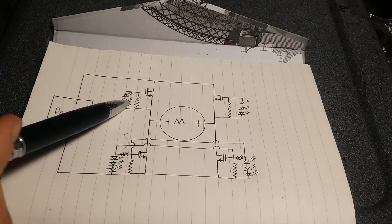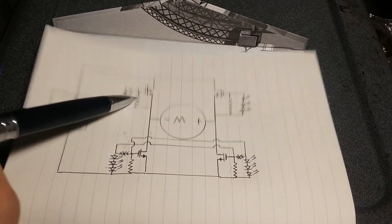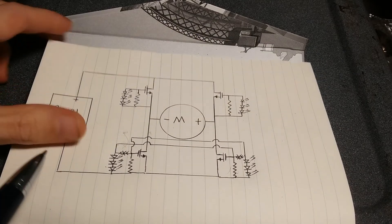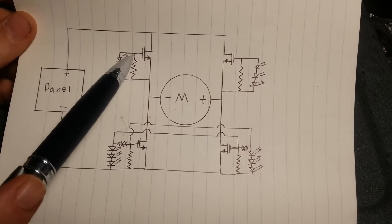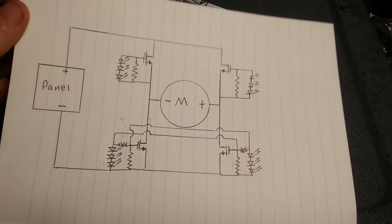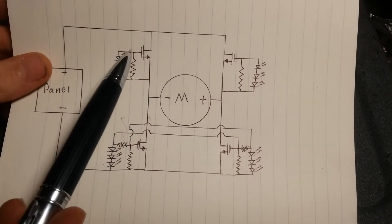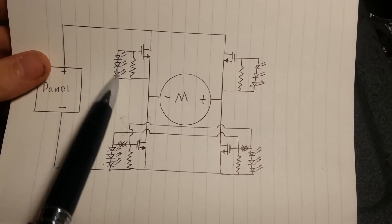This right here, I mean, LEDs are cheap as crud. Resistors are cheap as crud. By the way, these resistors, they're just to keep the MOSFETs biased in off state basically when no light is shining on the LEDs.